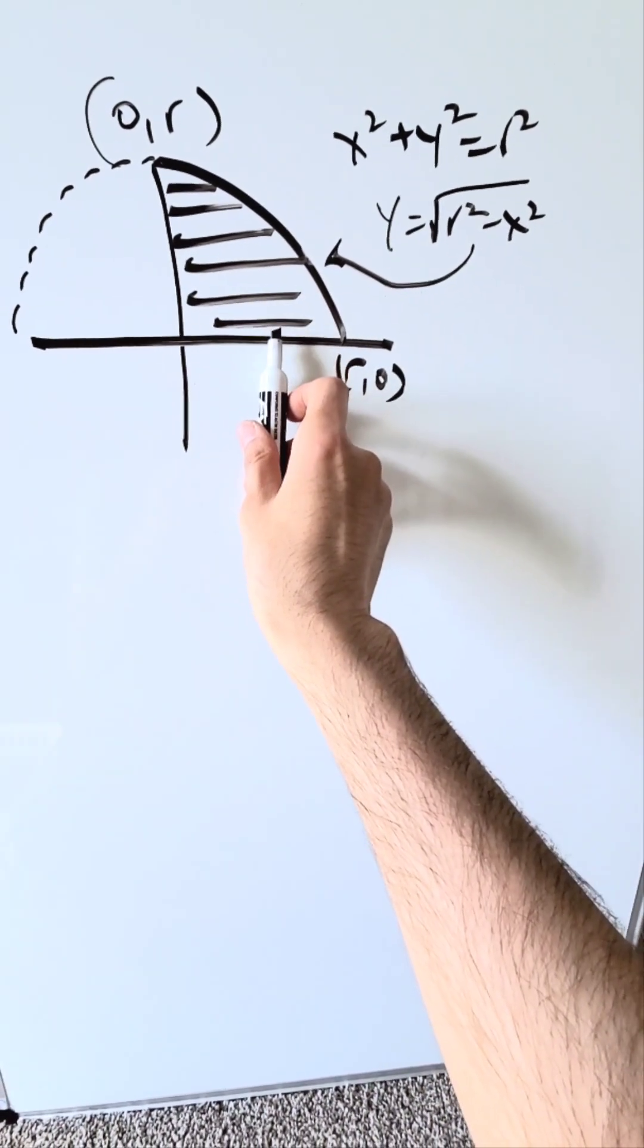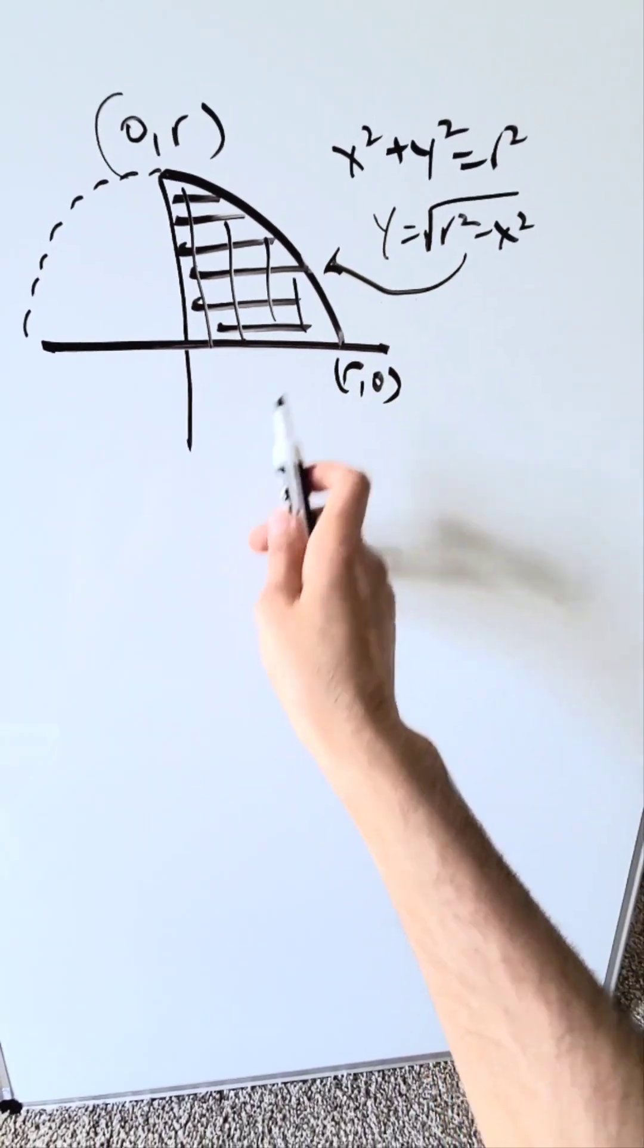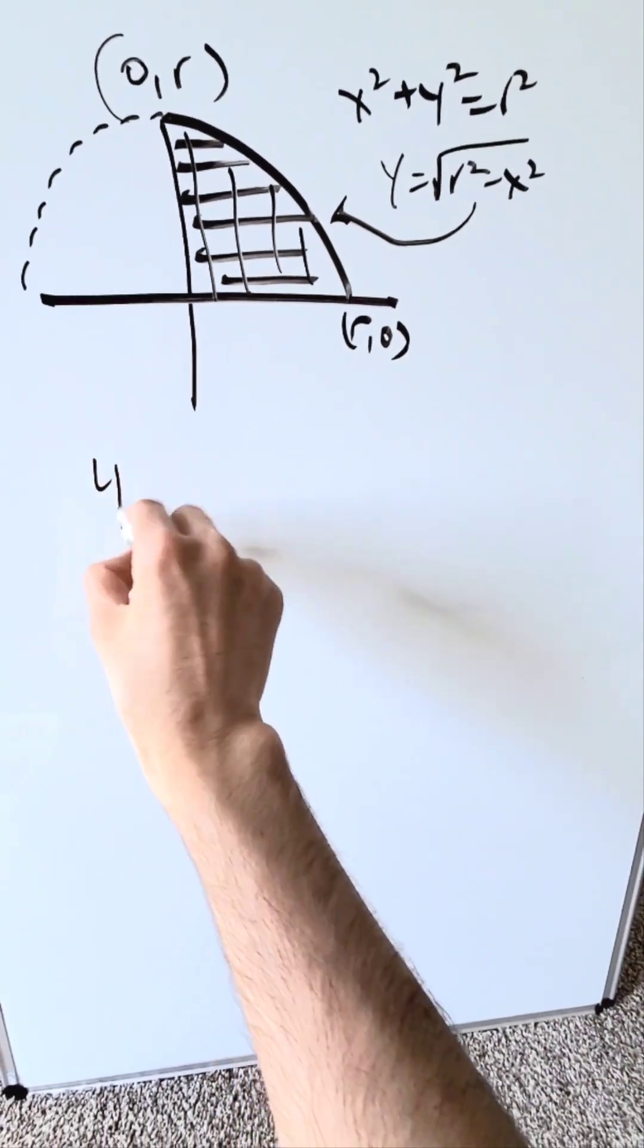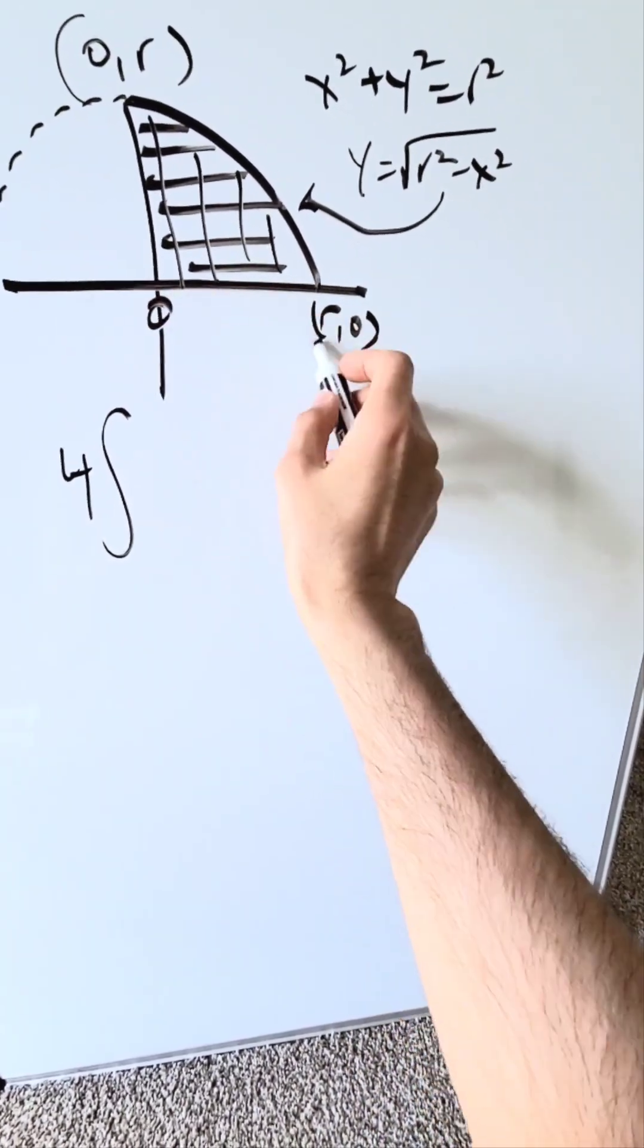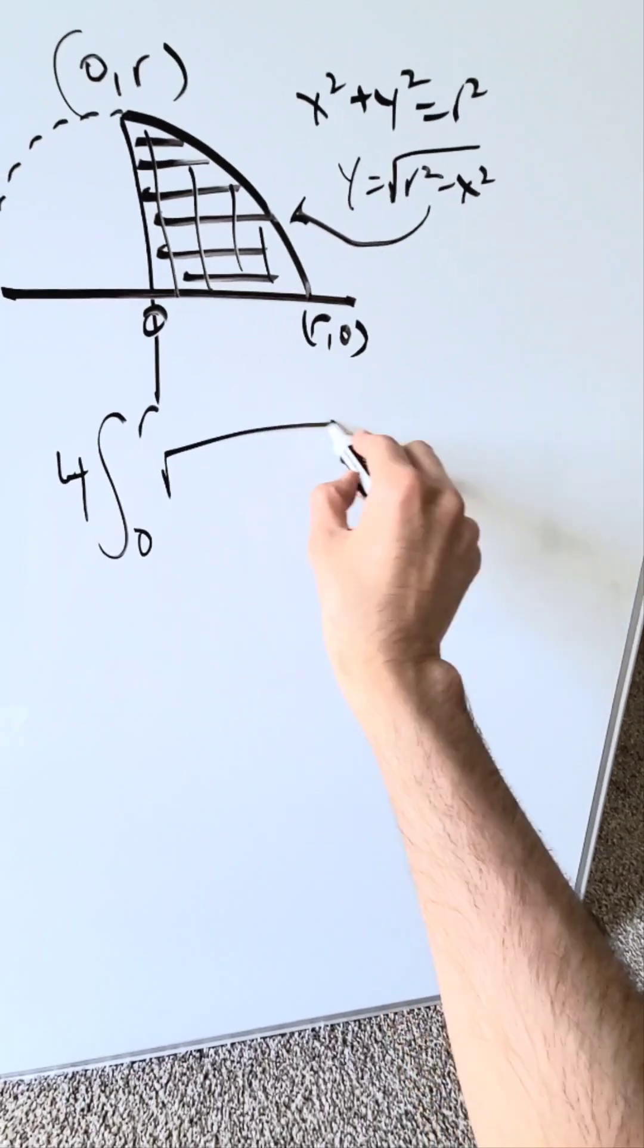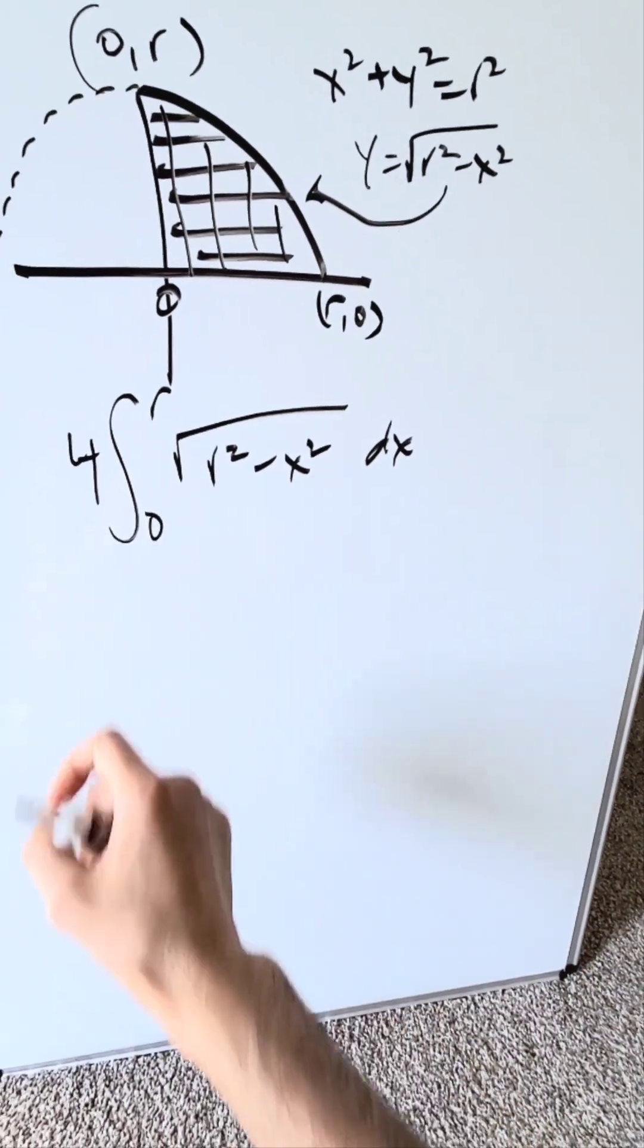You know this represents here half of a semicircle, but if I were to look at four of these, it represents the full area of a circle. I can set up here an integral, four of these areas from a lower limit zero, upper limit r, which is your radius. This function is square root of r squared minus x squared dx. It will give you the area formula for a circle.